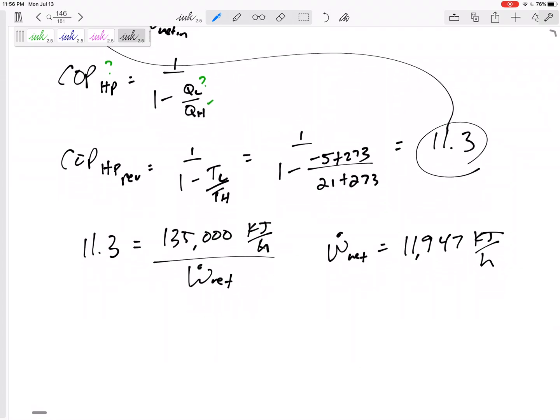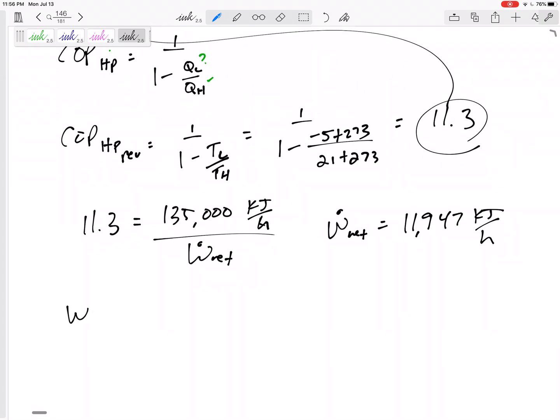So I would get W net in is 11,947 kilojoules per hour. We probably don't want kilowatts - kilowatts is kilojoules per second, so this would be 11,947, it's just a unit conversion from hours to seconds, 3600, divided by 3600: 3.32 kilowatts.